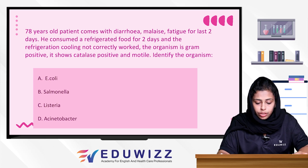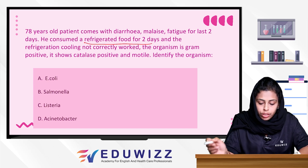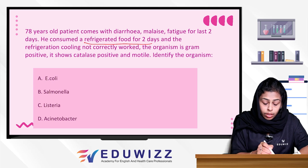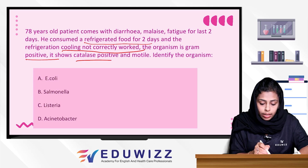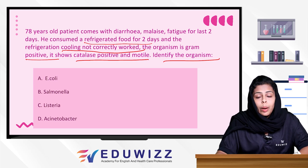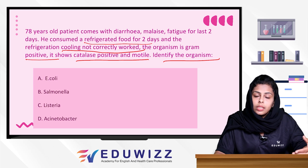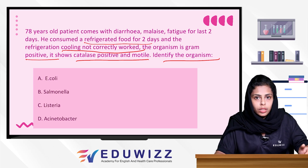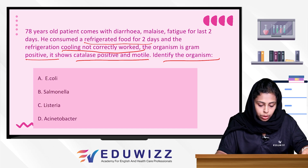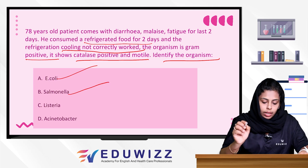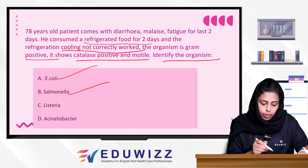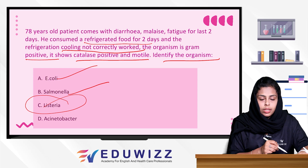Next question: A 78-year-old patient presents with diarrhea, malaise, and fatigue for the last 2 days. The patient consumed refrigerated food for 2 days and the refrigeration was not working correctly. The organism is gram-positive, catalase-positive, and motile. When you have refrigerated food involvement, a gram-positive, catalase-positive, motile organism — that confirms Listeria Monocytogenes as the answer.